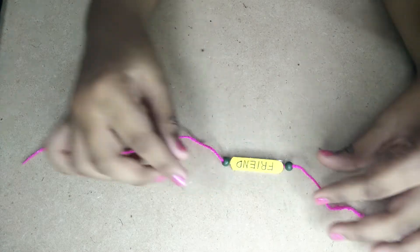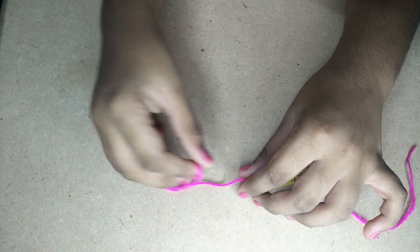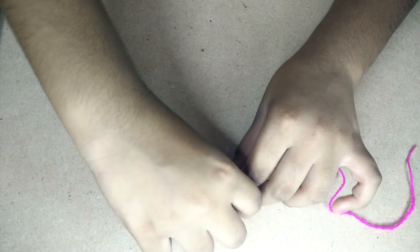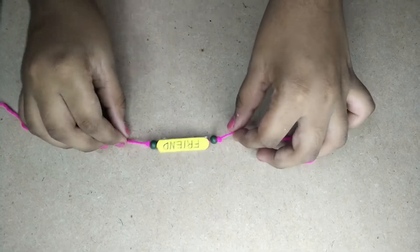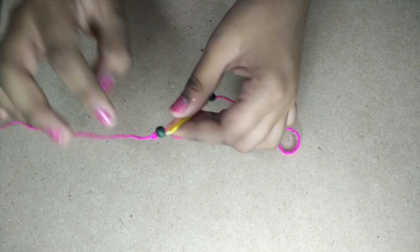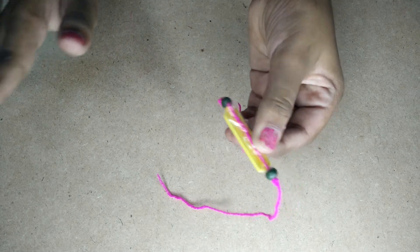Now that we put both beads on, we have to tie knots. Tie the knots on both sides so the beads don't come out.